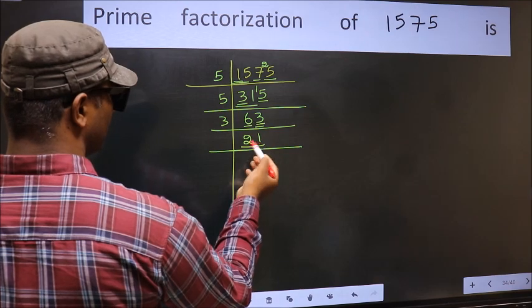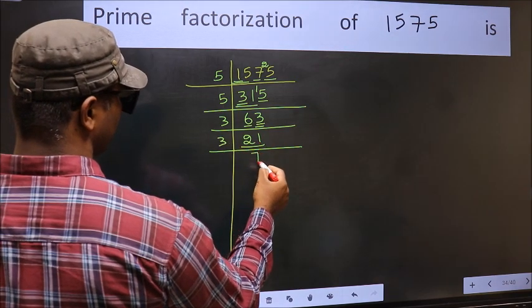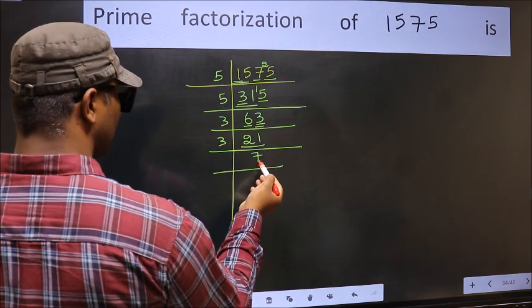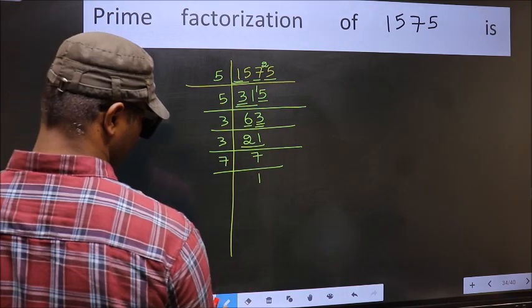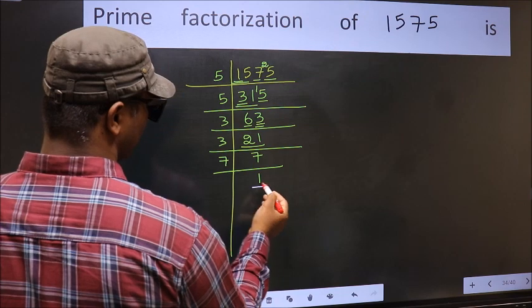Now, here we have 21. 21 is 3 times 7 is 21. Now, we have 7. 7 is a prime number, so 7 times 1 is 7. So, we got 1 here.